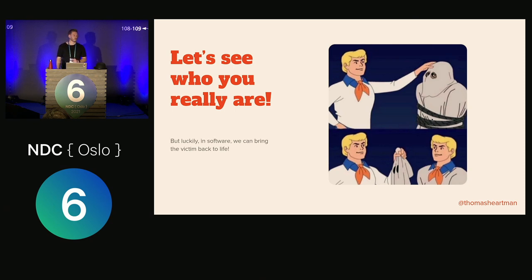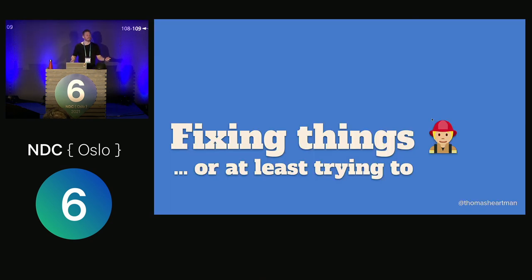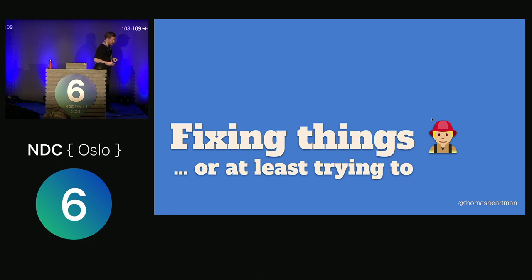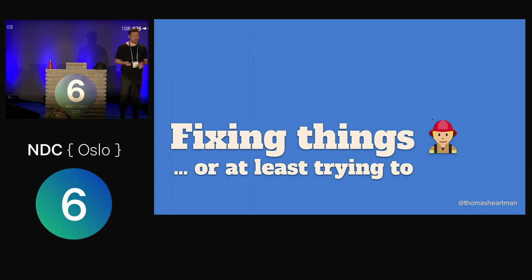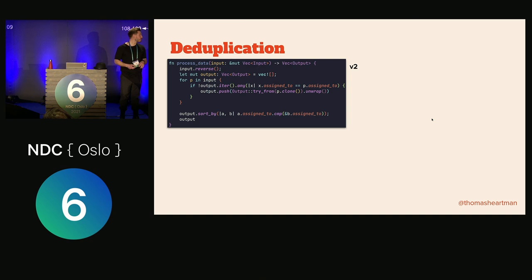The good thing is that in software, when something dies, we can bring it back. Let's see what we can do to fix things. As we saw, the really worst thing was deduplication. Here is the first version of the deduplication algorithm in version two. What it does: we get a vector of input elements, reverse it, allocate a new vector, and then for every element in the input we check whether this ID exists in the output vector. If it does, don't do anything; if it doesn't, insert it.